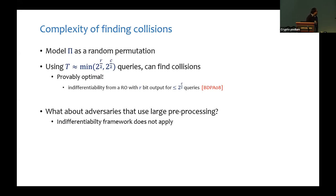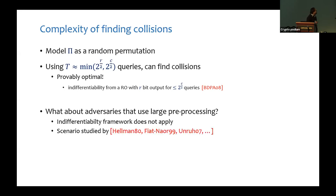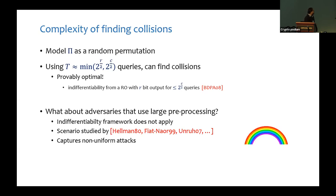However, in the real world the permutation π is public, and an adversary might do better by performing a lot of pre-processing on the permutation. In this setting, the birthday-style attack is no longer optimal, and in particular the indifferentiability framework no longer applies. The setting of pre-processing adversaries has been studied in many earlier works, for example in the context of function inversion and collision resistance, and it captures the setting of non-uniform attacks such as those using rainbow tables.